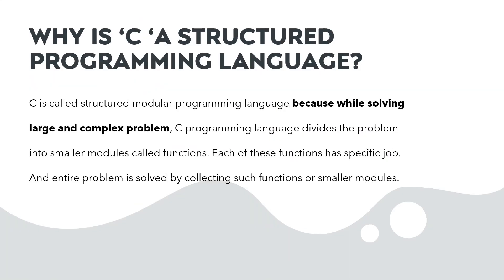Why is C called a structured programming language? We call it a structured programming language because when we solve large and complex problems, we divide the problem into smaller modules — smaller functions. Every function has its specific job, and the problem is solved by collecting such functions or smaller modules together.